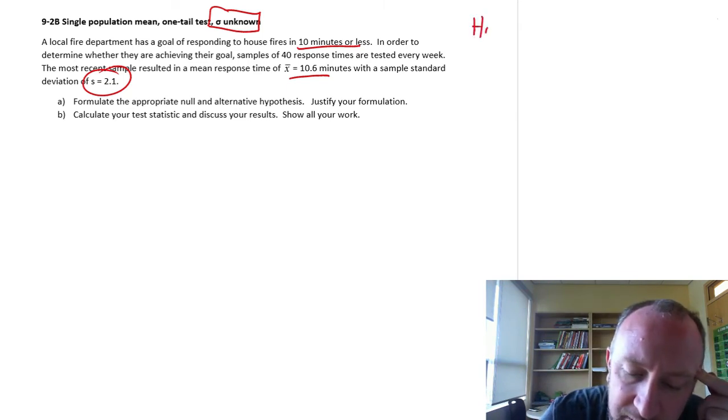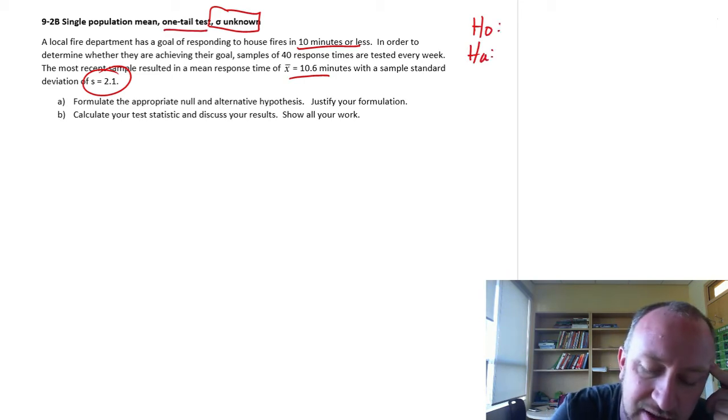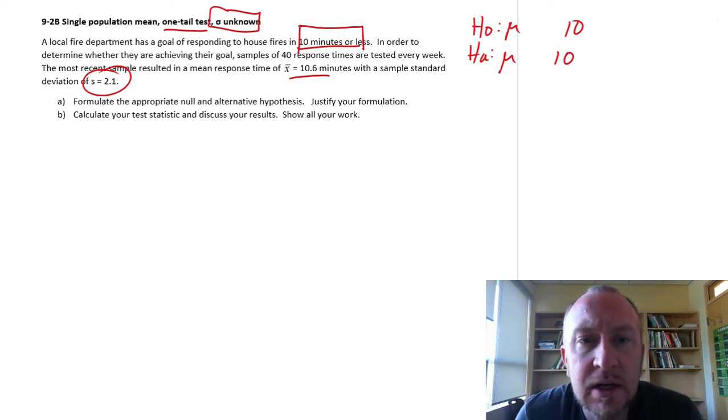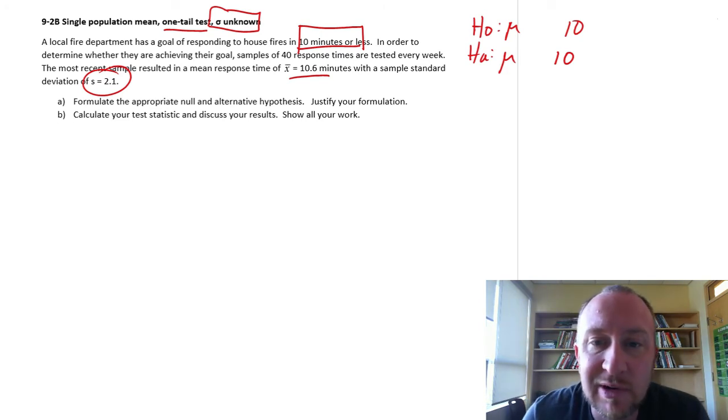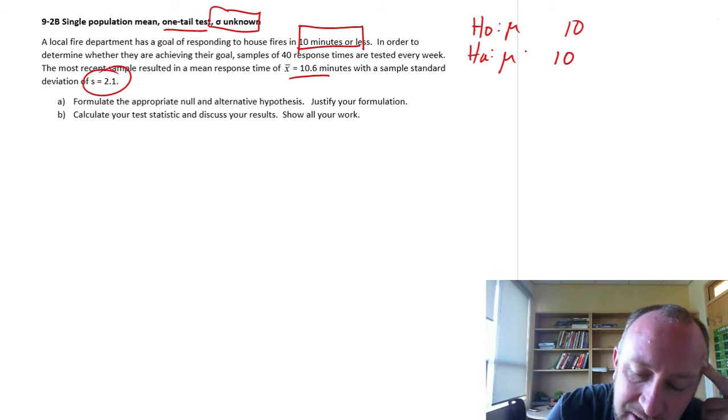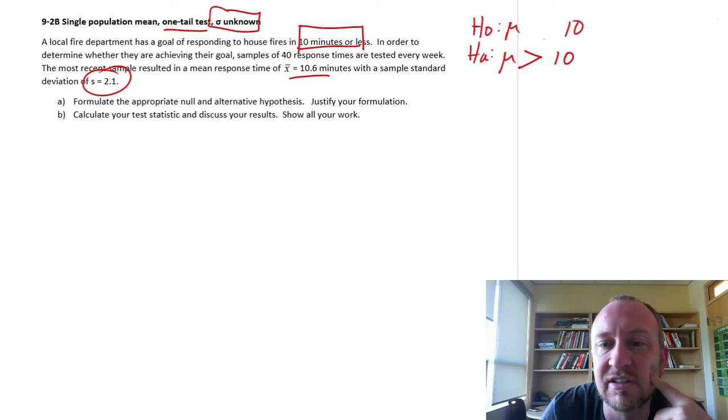So part one, null and alternative. Well, we already know this is a one-tailed test, so that's a bit of a giveaway. I know that we're testing against a value of 10 minutes. If I can be a little bit less messy, that would be helpful. Now, is this an upper tail or a lower tail test? Well, in this case, our goal here is to respond to house fires in 10 minutes or less. I want to see if we have evidence to show that there's a problem.